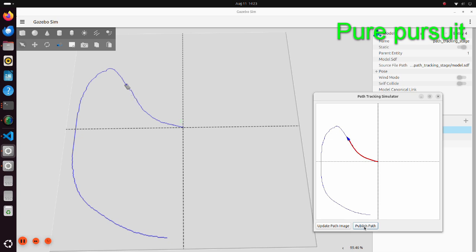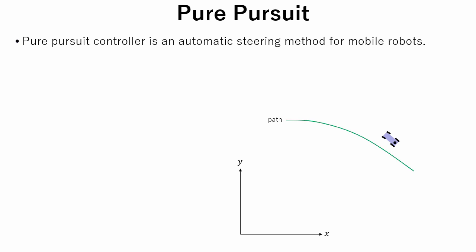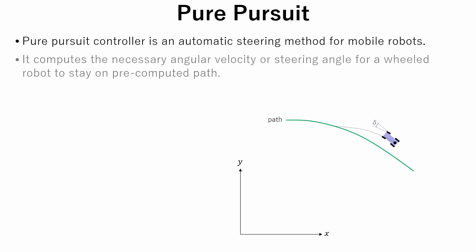Now let's see the theory behind the pure pursuit algorithm. Pure pursuit controller is an automatic steering method for mobile robots. It computes the necessary angular velocity or steering angle for a wheeled robot to stay on a pre-computed path.